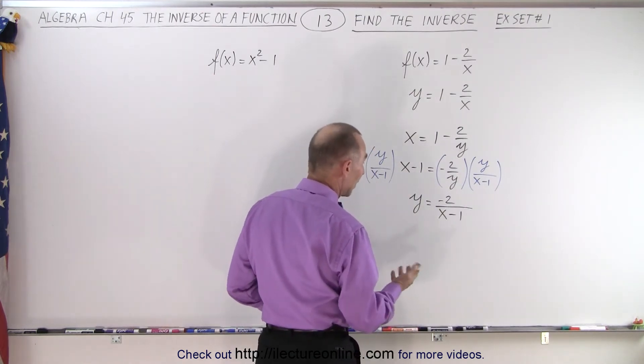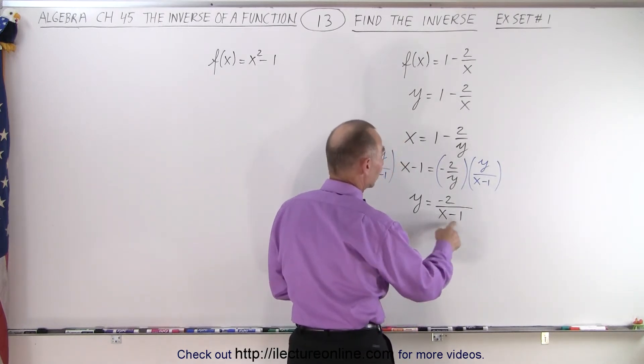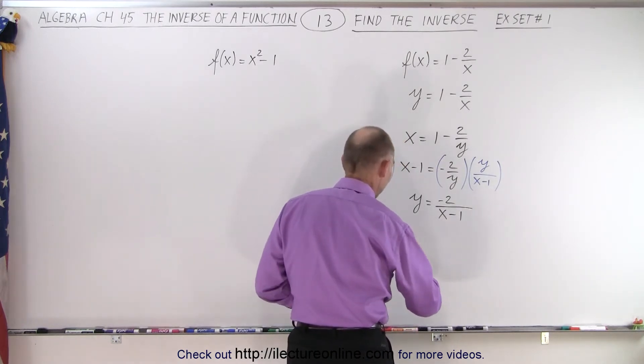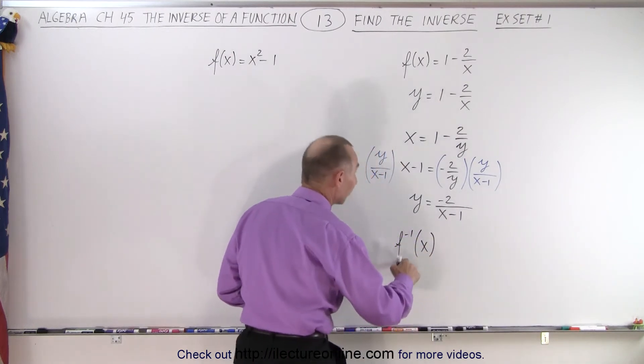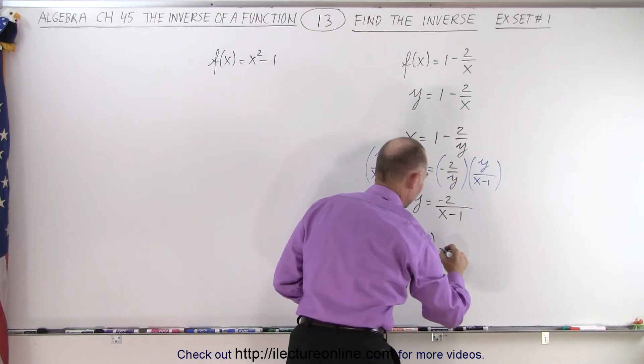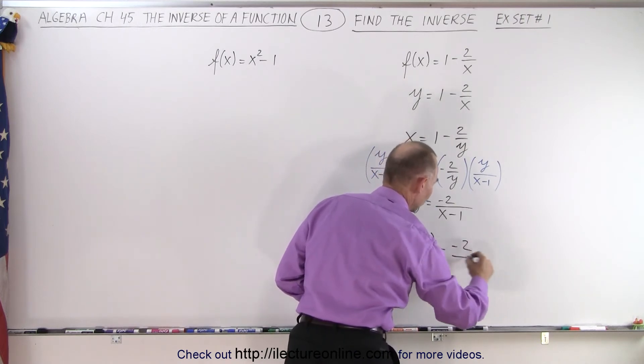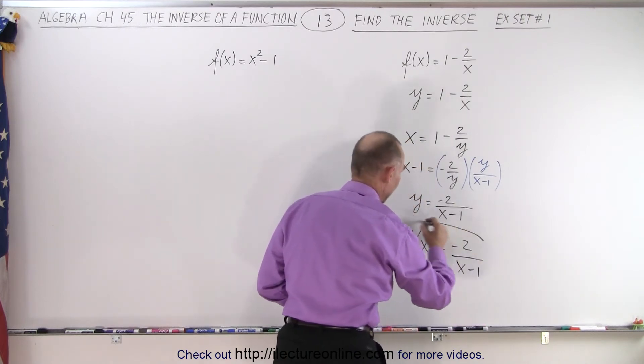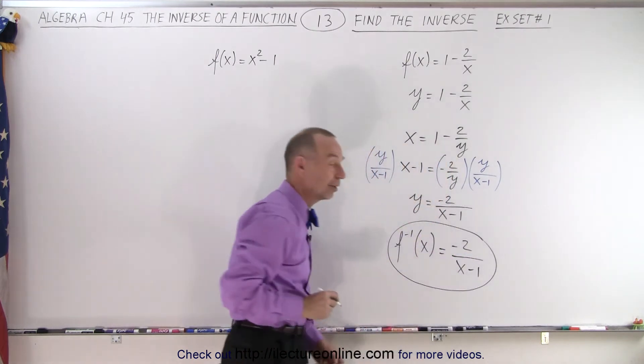And now that we have y equals minus 2 over x minus 1, now we can say that f inverse of x, in other words, the inverse of the function f of x, is equal to negative 2 over x minus 1. And that is how we find the inverse of that function.